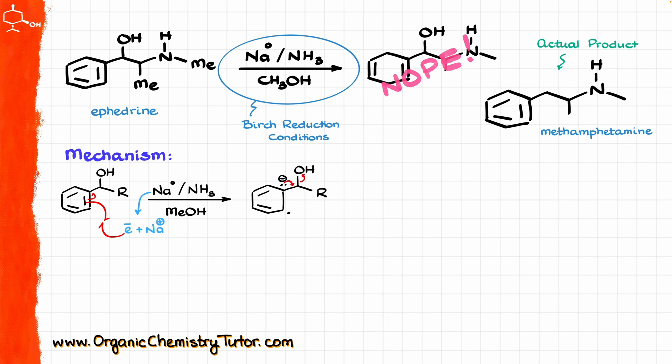The OH is essentially going to serve as a leaving group, giving us the following intermediate. Once we have this leaving group dissociation, we are going to end up with the radical.